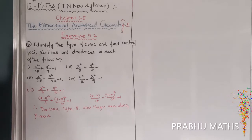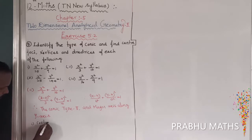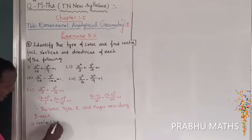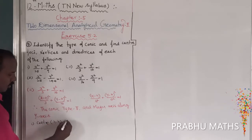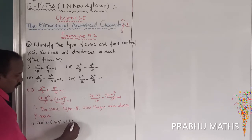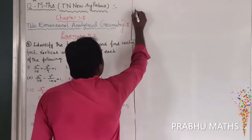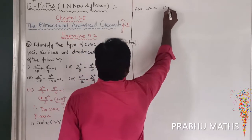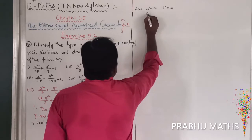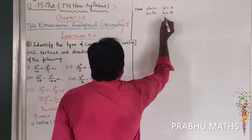First, find the value of the center. The center (h, k) is equal to — comparing with the equation — h = 0 and k = 0, so the center C is (0, 0). Next, a² = 10 and b² = 3, therefore a = √10 and b = √3.